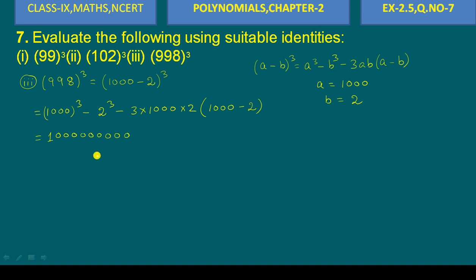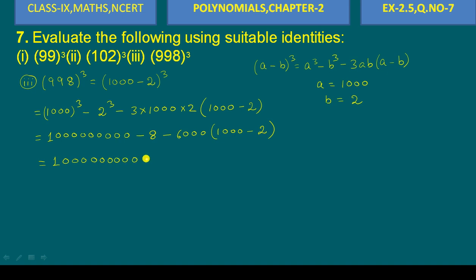Now 2 to the power cube is 8. We multiply 3 times 2, and then 3ab gives us 6000. So we have the terms: 1,000,000,000 minus 8, minus 6000 into 998. Working through the arithmetic step by step, minus 6 into 1 is 6, and we proceed with the calculation.